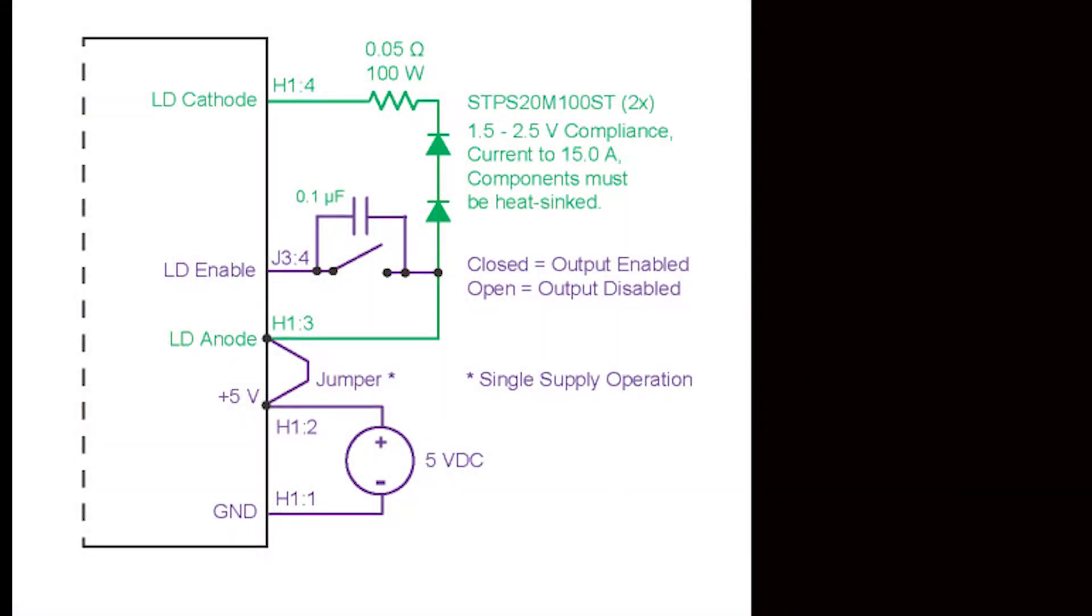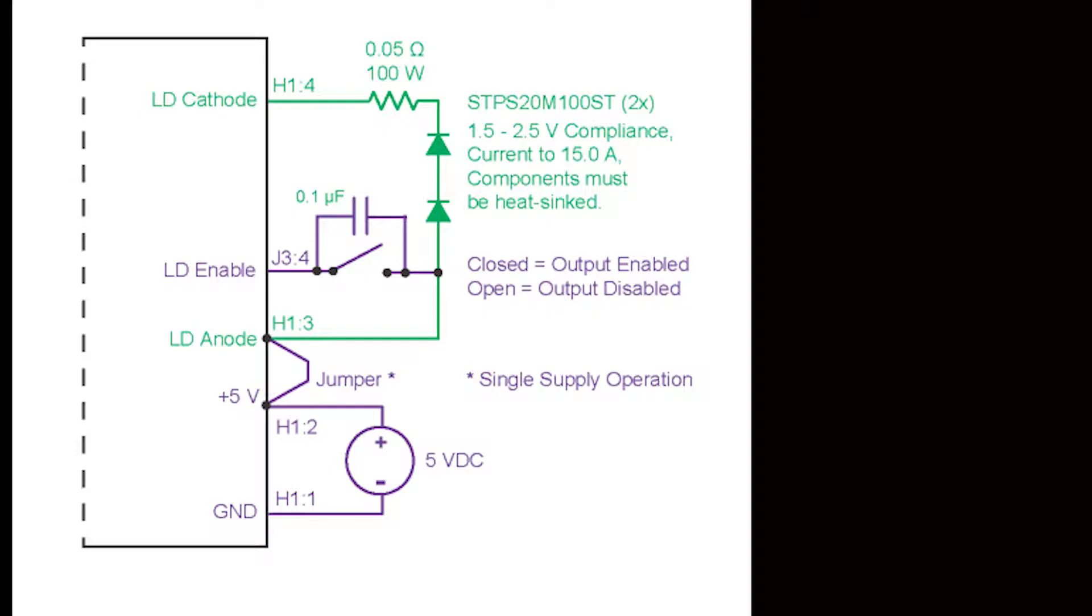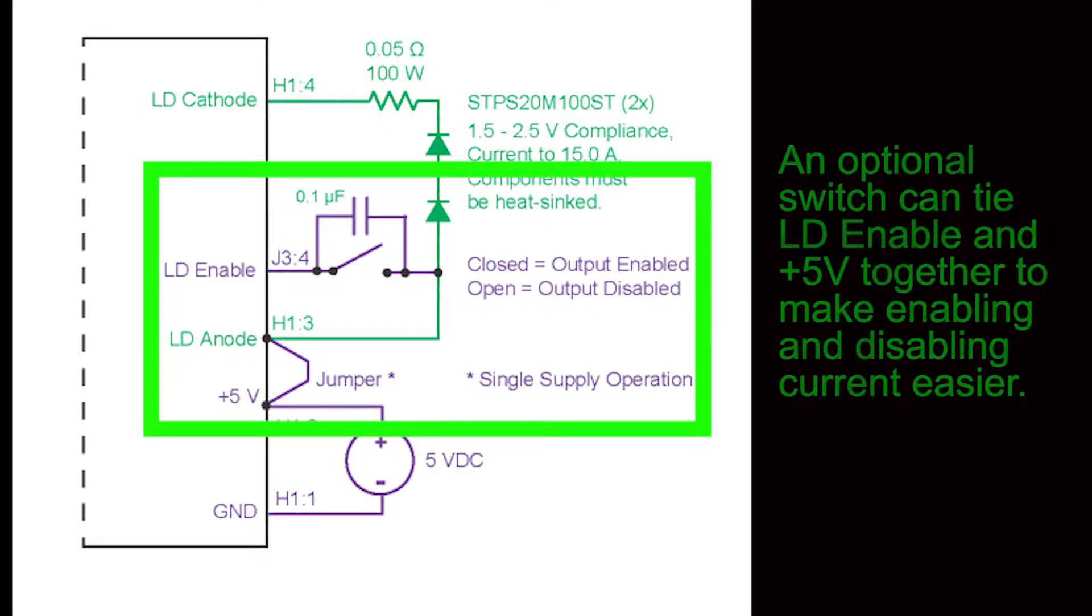A constant current test load can be as simple as a resistor and diodes in series. Install this in the LD cathode and LD anode pins of the H1 terminal strip. An optional switch tying LD enable to plus 5 volts will make enabling and disabling current easy.